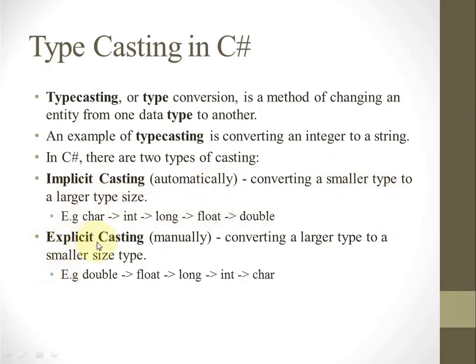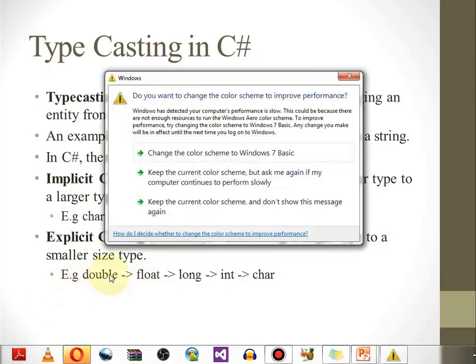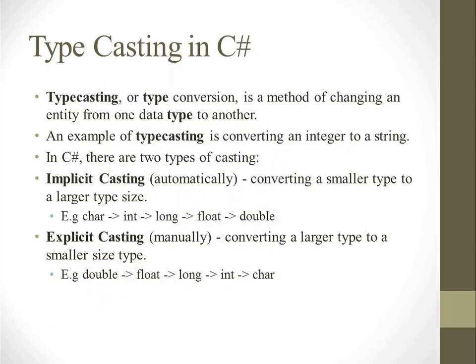What is explicit casting? It is done manually by the programmer, converting a larger type to a smaller size type. For example, double is a larger type. Float is smaller in size than double. So we can convert double into float, float into long, long into integer, and then to character.